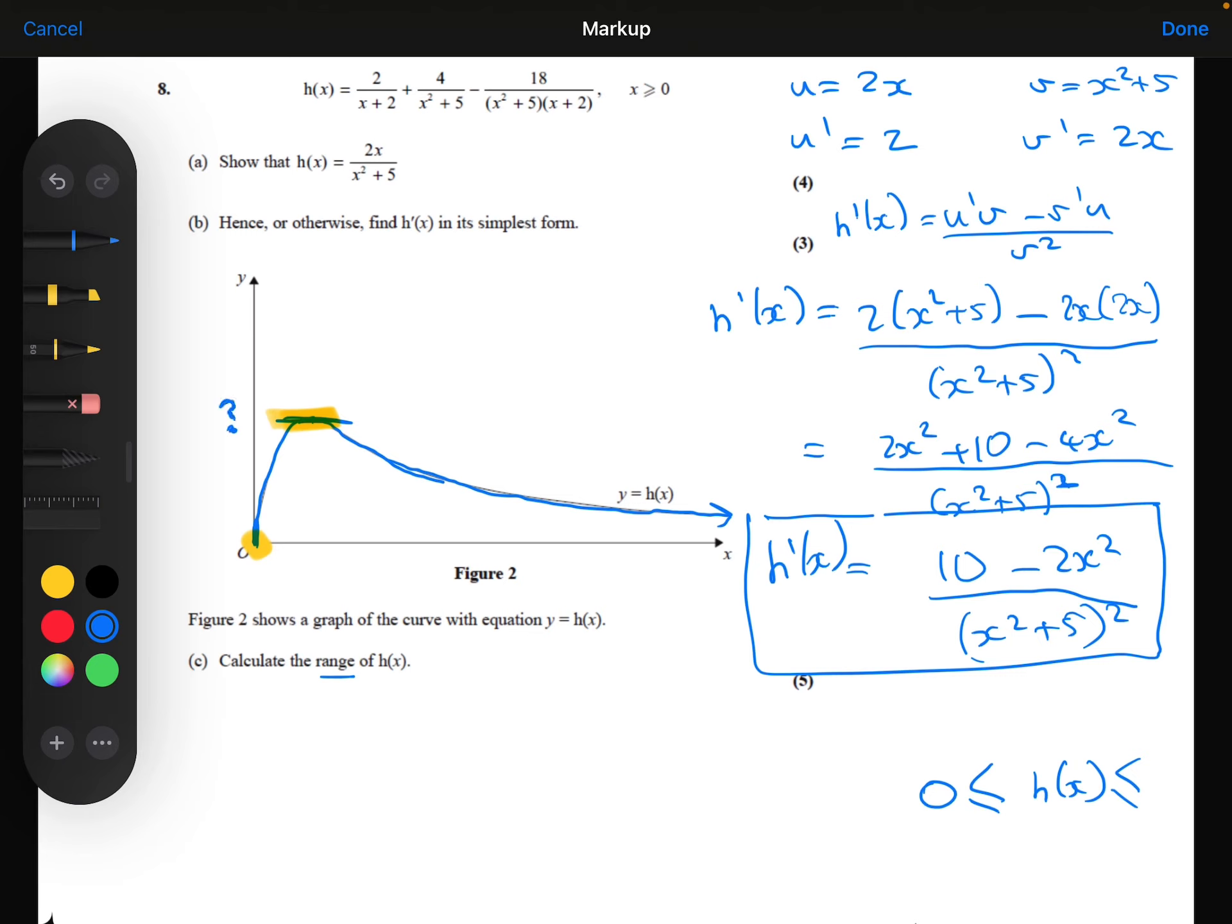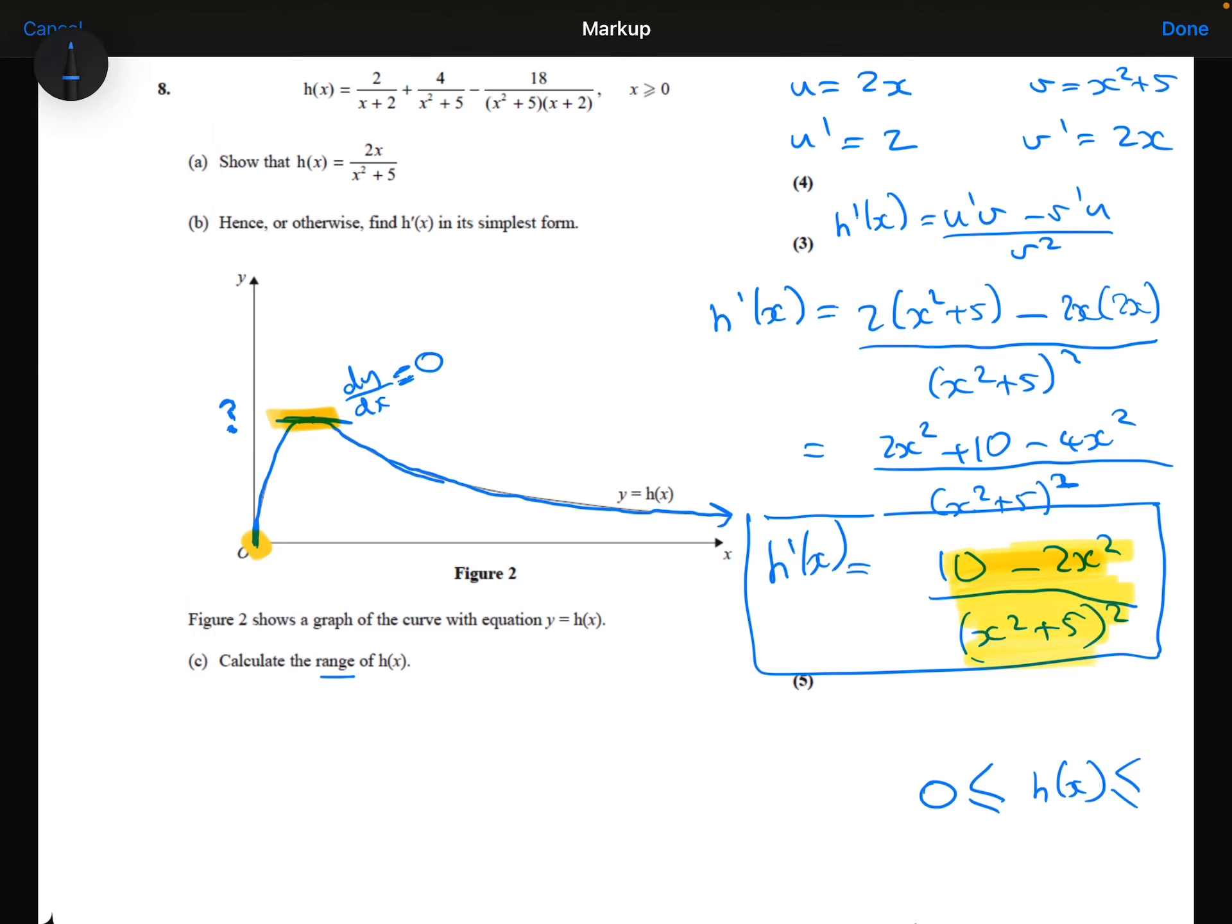I want to know what's the y value here. Well I know at this point it's a stationary point. So I know the gradient equals 0. So if I take my gradient function that I worked out in part B, this thing, and make it equal to 0, that's going to help me to work out the coordinates of that maximum point.